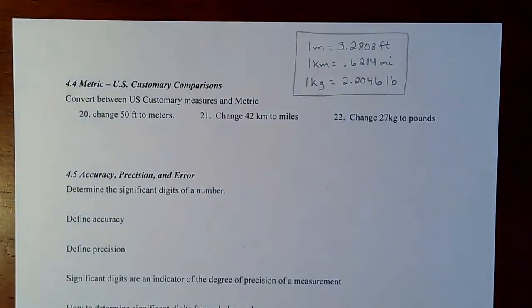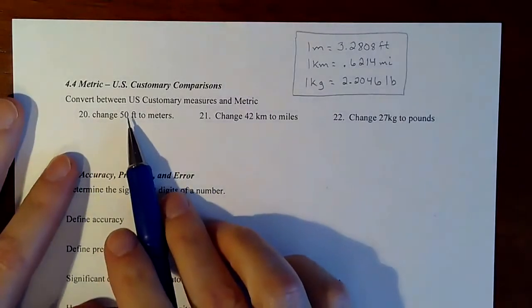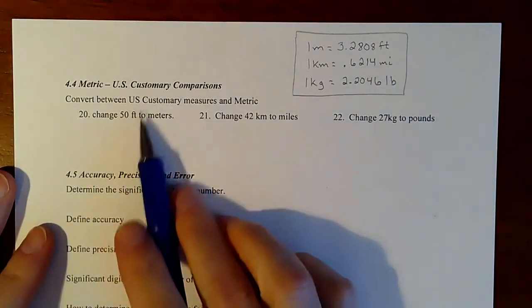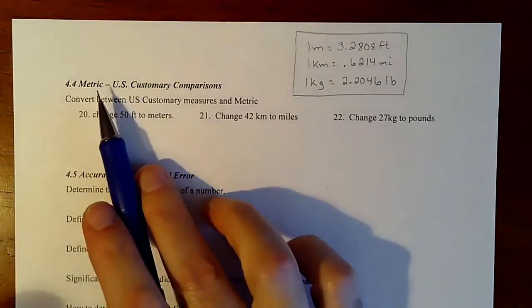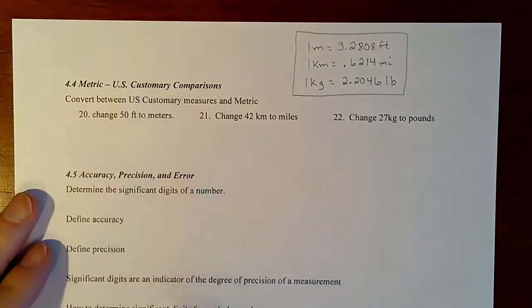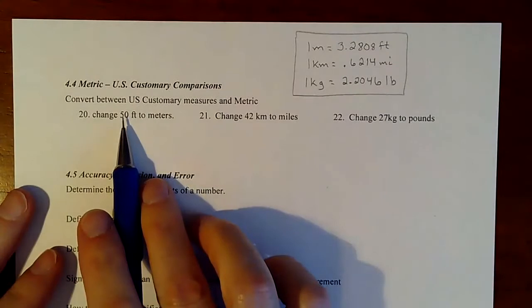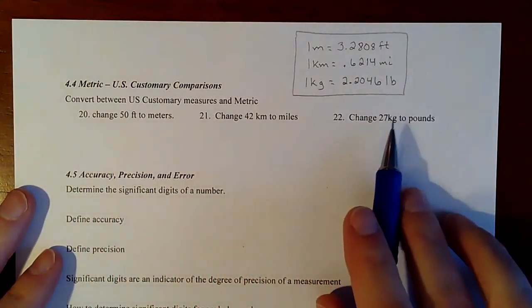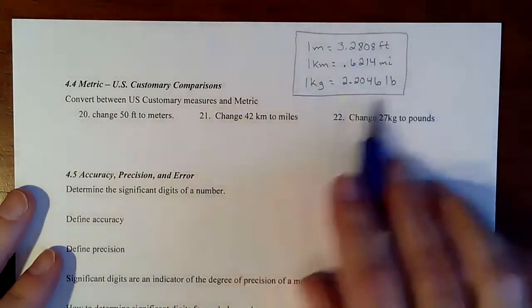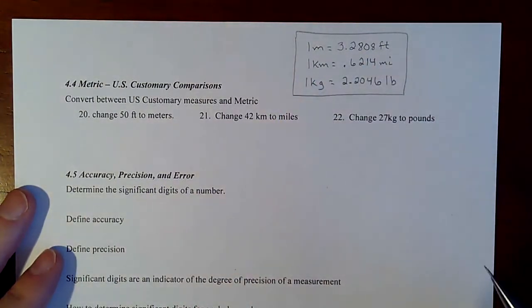In this lesson, we are going to do some conversions. We're going to take something in U.S. measurement and convert it into metric, or take something in metric and convert it into U.S. So we're going to be converting feet into meters, kilometers into miles, and kilograms into pounds. And here is our scale that we're going to be using for that.